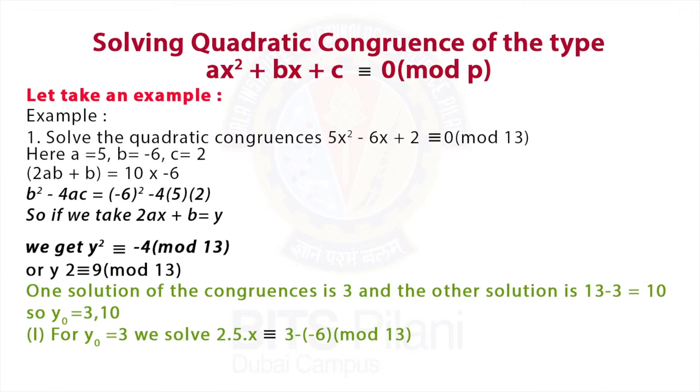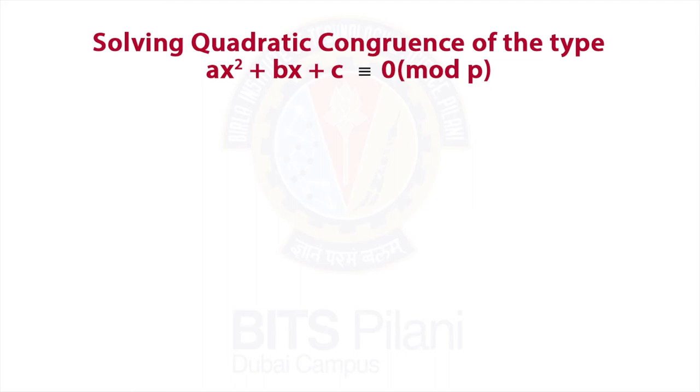using 2ax ≡ y₀ - b (mod p), this gives us 10x ≡ 9 (mod 13). We can easily see x = 10 is one of the solutions.